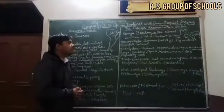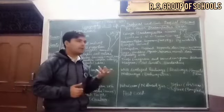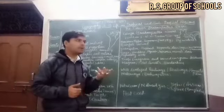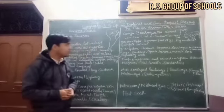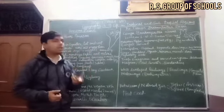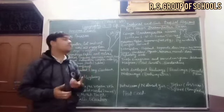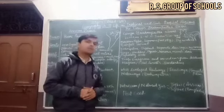Now the climate: a monsoon type climate is here because of the availability of water and nearness to the sea. Rainfall occurs more than 200 cm. The summer is hot and dry and the winter is dry.